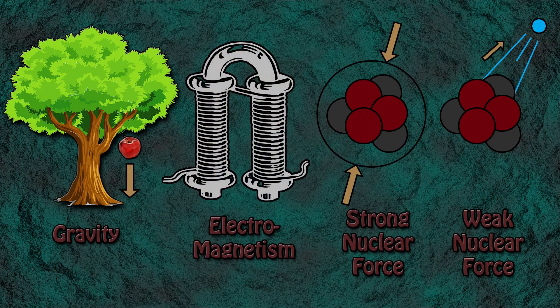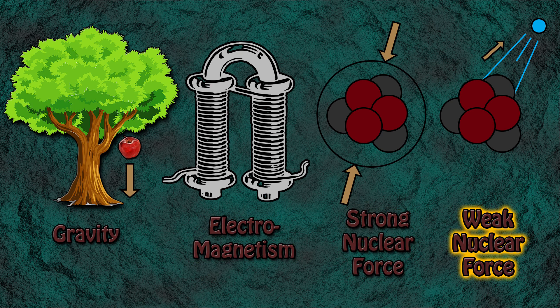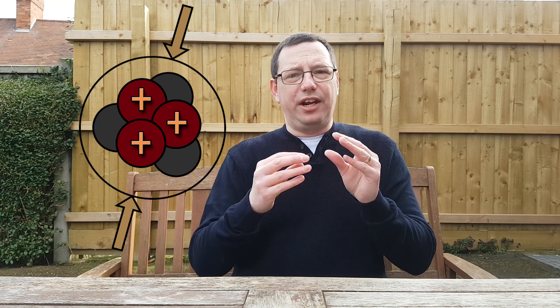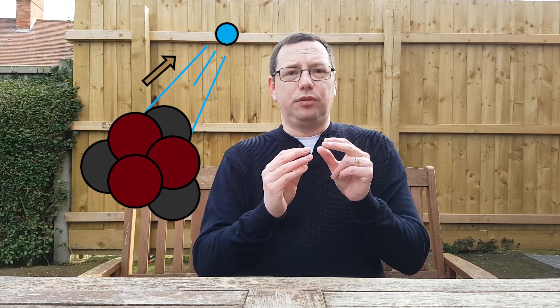But why doesn't the atom just fall apart? In physics, there are four fundamental forces: gravity, electromagnetism, the strong nuclear force, and the weak nuclear force. Three of these forces help keep the atom together. Electromagnetism helps keep the negatively charged electrons attached to the positively charged nucleus. The strong nuclear force helps keep the protons and the neutrons together in the nucleus. And the weak nuclear force controls how the atom decays over time.